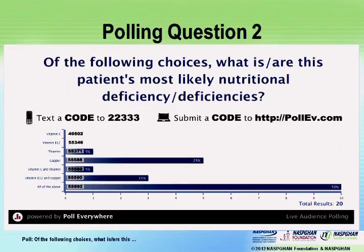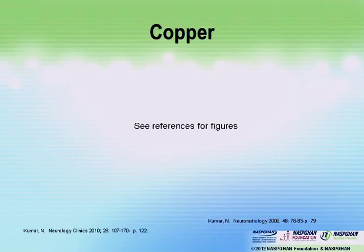The answer is that you would consider probably all of the above because she's lost a lot of weight and hasn't been very compliant. But what she actually had was copper deficiency. Oftentimes copper deficiency goes along with B12 deficiency.